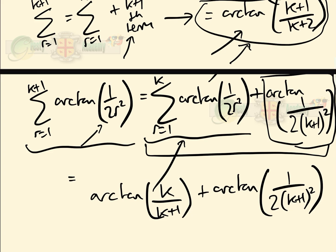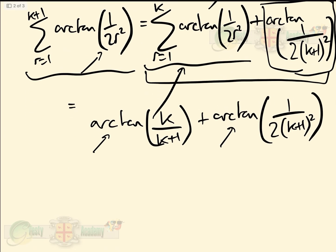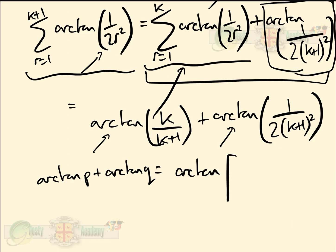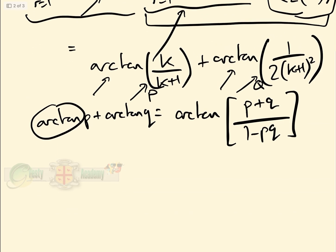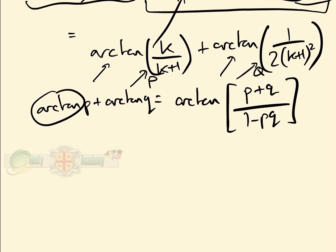We now have arctan a plus arctan b, so we use the formula proved in part A — arctan P plus arctan Q equals arctan of P plus Q over 1 minus PQ. The question says 'hence', so we must use it. Here P is k over k plus 1, and Q is 1 over 2(k+1) squared.